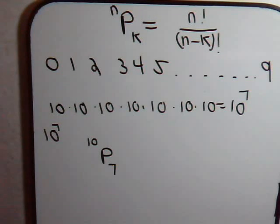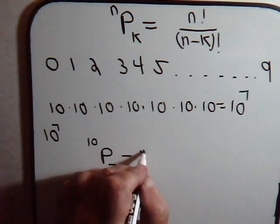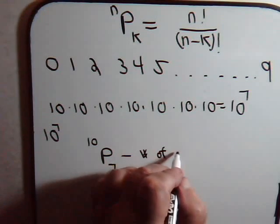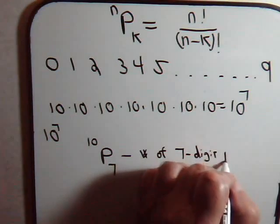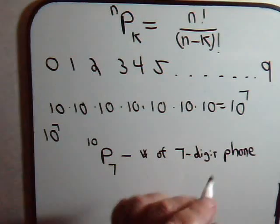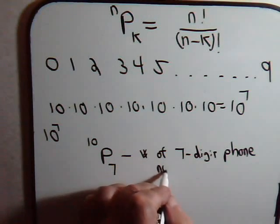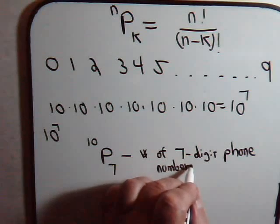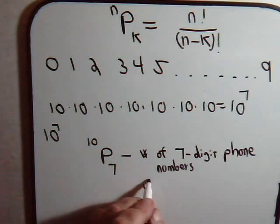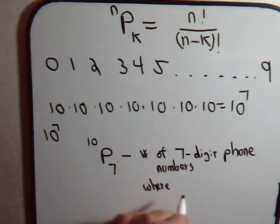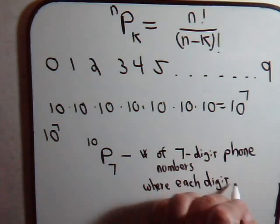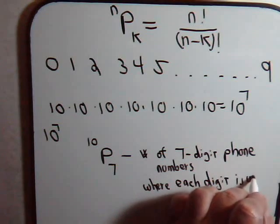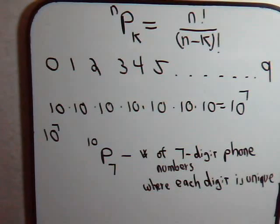We're going to select seven of them. So this would give us then, this would be the number of seven digit phone numbers where each digit is unique.